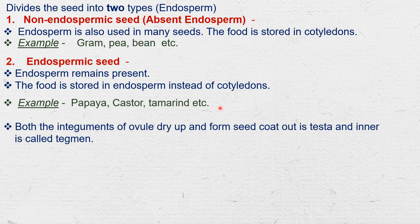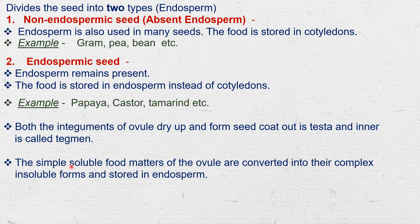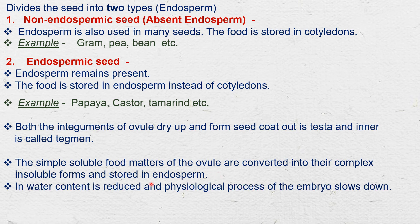Both integuments of the ovule dry up and form the seed coat: the outer integument is the testa and the inner integument is called the tegmen. The simple soluble food matter of the ovule is converted into complex insoluble forms and stored in the endosperm or cotyledons.